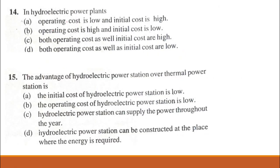Problem 14. In hydroelectric power plants: operating cost is low and initial cost is high; operating cost is high and initial cost is low; both operating cost and initial cost are high; or both are low. The answer is: operating cost is low but initial cost is high, because the construction of dam and accessories require more cost. So initial cost is high but operating cost is low.